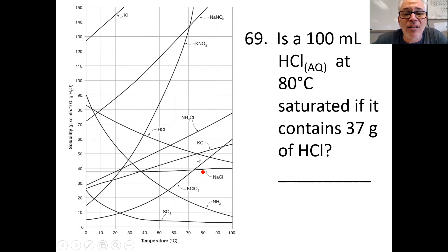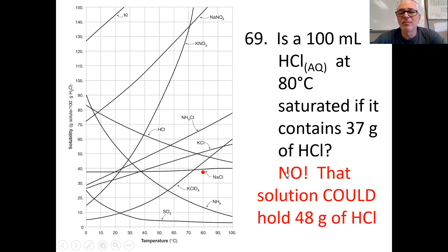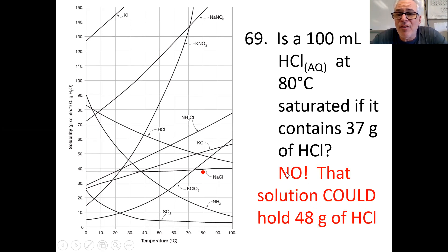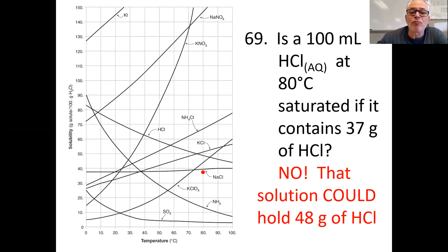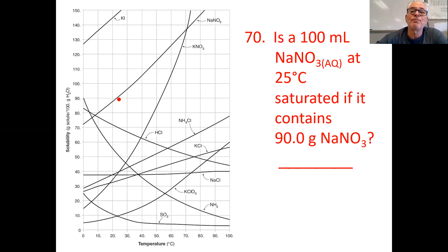The HCl line would be right here. That's 37 grams, but the line is way up there. It could hold 47 or 48 grams. This is way below — the red line is 37, there's plenty of room to fit more. So no, this is an unsaturated solution.